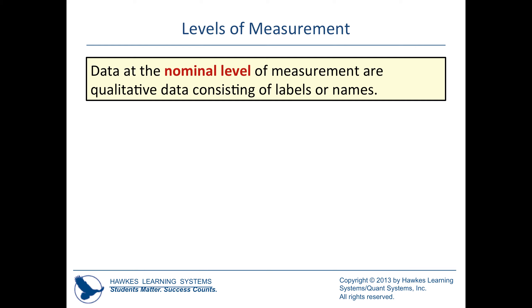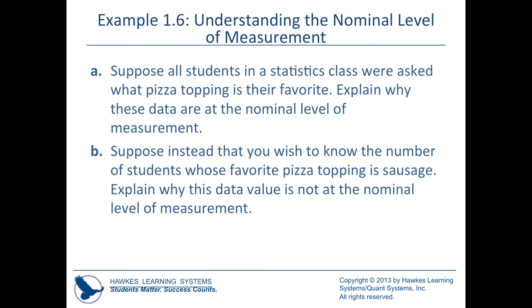Ordinal level is also qualitative and categorical but has a natural ordering. Examples: freshman, sophomore, junior, senior — there's a natural ordering. Gender has no natural ordering (nominal), but class standing does (ordinal). If students are asked about favorite pizza toppings, that's nominal — it's categorical and there's no natural ordering on pizza toppings.